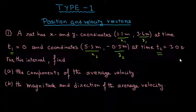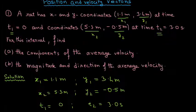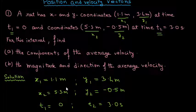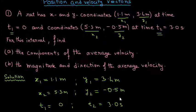Let us write all the given quantities before starting the solution. We have x1 = 1.1 m, y1 = 3.4 m, x2 = 5.3 m, y2 = −0.5 m, t1 = 0, and t2 = 3 seconds.